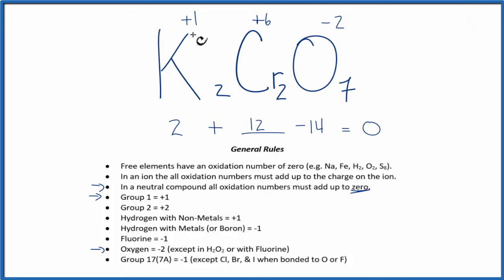So to recap, we found the oxidation numbers for the elements we know, then we use this rule here that in a neutral compound, all of those numbers add up to 0 to figure out the one we didn't know, in this case, the chromium.